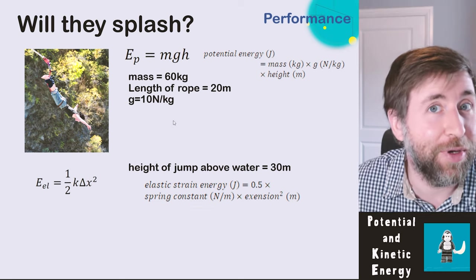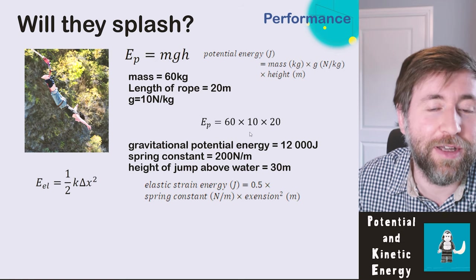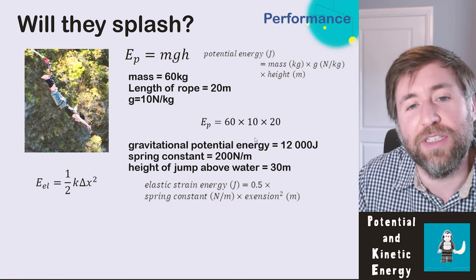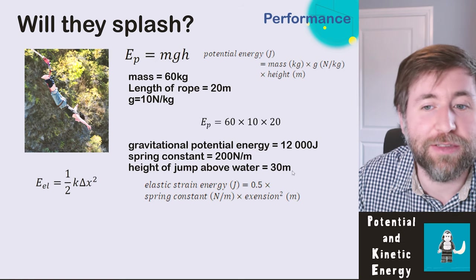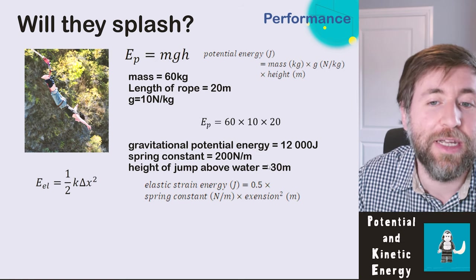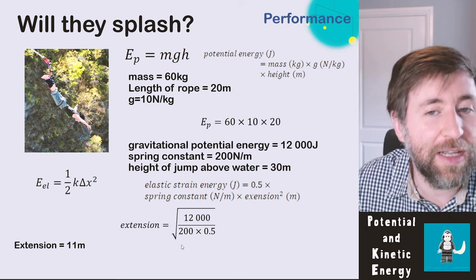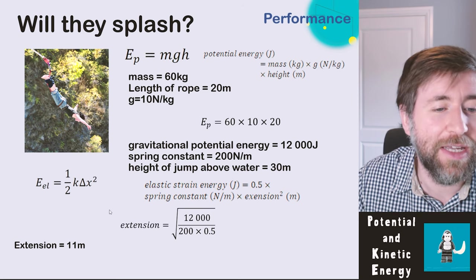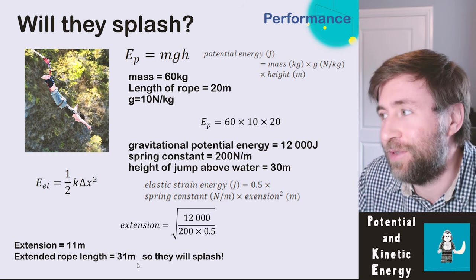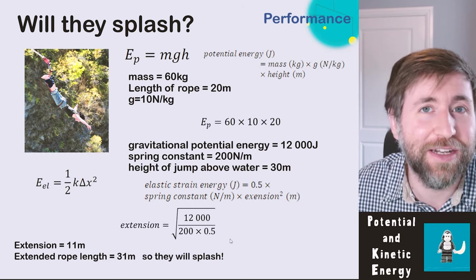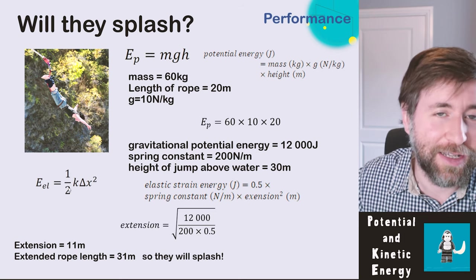Here's a similar question: GPE = mass × g × rope length = 12,000 joules. Spring constant is 200 N/m, height above water is 30 meters. Rearranging gives extension = 11 meters. Original rope length was 20 meters, so total = 31 meters — greater than 30 meters, so they will splash, going one meter into the water. The principle: work out one store and use it to make another calculation.